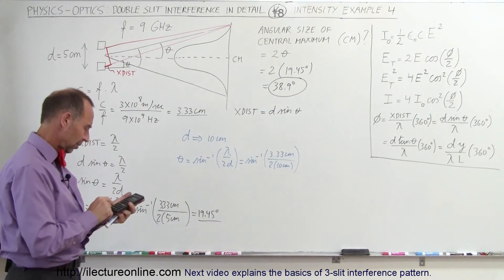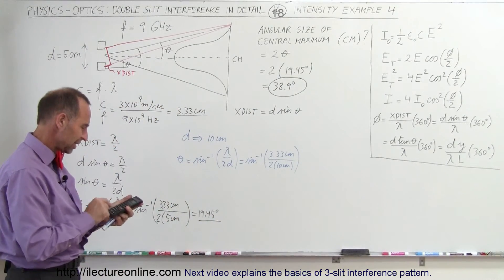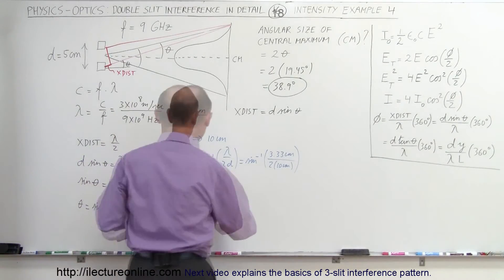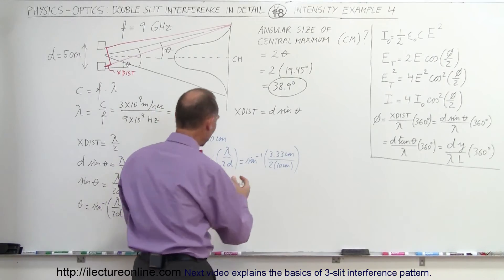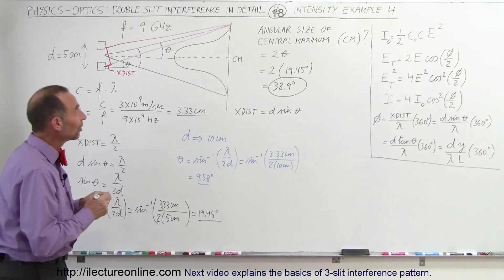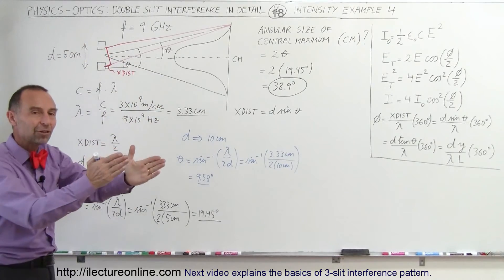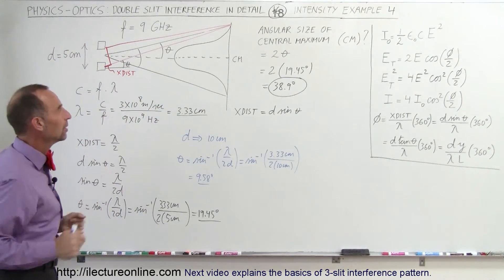So now we get 3.33 divided by 20, and take the inverse sine of that, which gives us 9.58 degrees. Double that is just slightly less than 20 degrees, meaning by doubling the distance between the two antennas, we just halved the central max to make it into a narrower beam.